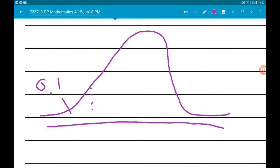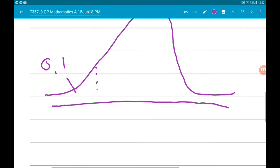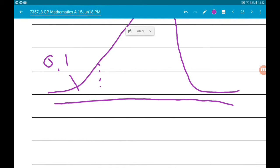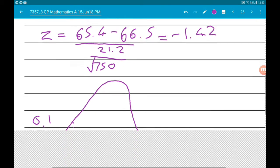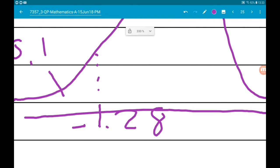Go to inverse normal, put in the area as 0.1, the mean as 0, and sigma as 1, and we will get that our critical value is minus 1.28.